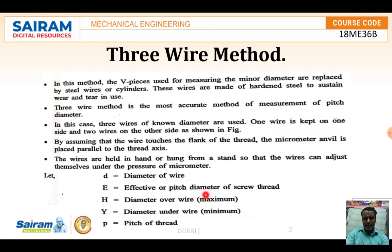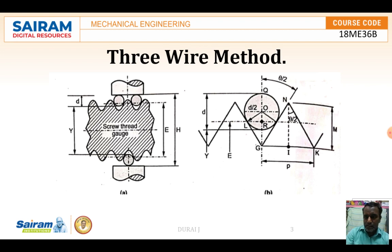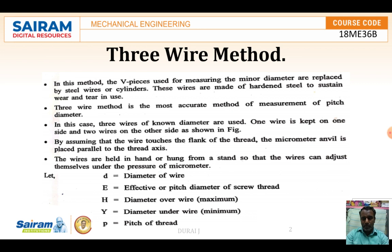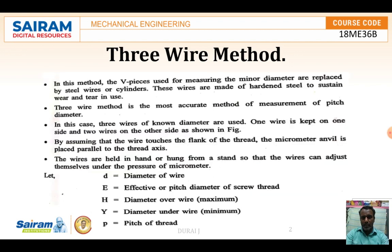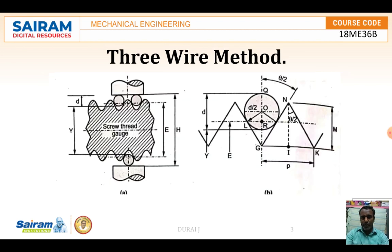Here D is the diameter of the wire, E is the effective pitch diameter, and H is the diameter over the wire. Y is the diameter under the wire. P is the pitch of the thread. H is the diameter over the wire and Y is the diameter under the wire — that means from the bottom of one cylindrical wire to the other. That distance is called Y.